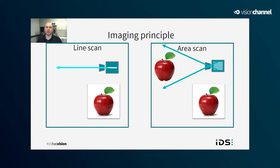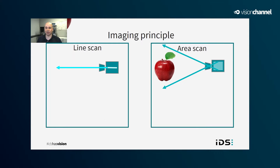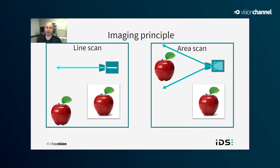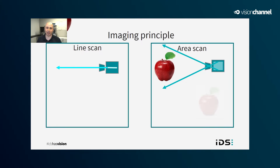A scanning motion is required for line scan imaging. This scanning motion could come from movement of the camera or movement of the subject, and it could be translational movement such as a conveyor belt, or rotational movement such as a rotating cylinder. Later on in this session, I'll be demonstrating how to use line scan imaging with a rotating soda can.